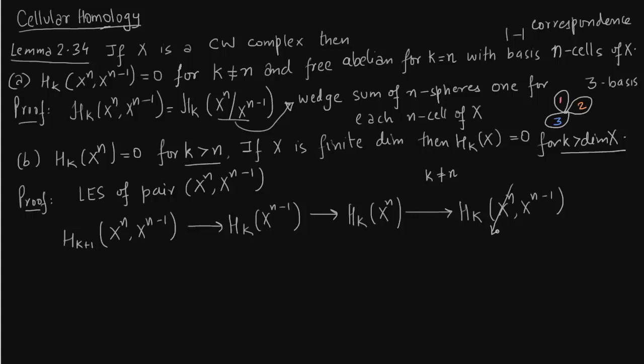So this will be 0 by part A, and this is k+1 not equals to n. So this will again be 0 by part A. So k+1 is not n. So this is 0. Therefore we have an isomorphism between H_k(X^(n-1)) and H_k(X^n). So this is an isomorphism here.